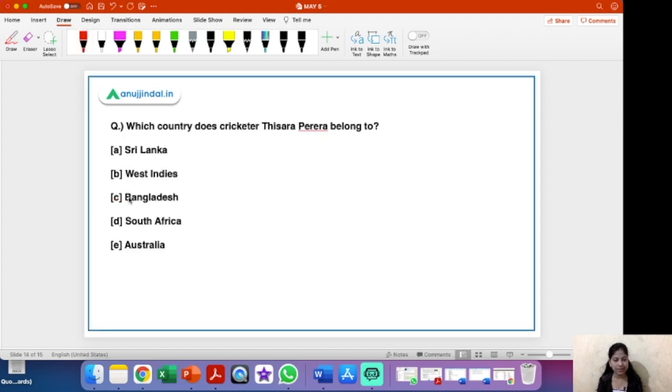Next and last question is which country does cricketer Thisara Perera belong to? So you have again the five countries right in front of you: Sri Lanka, West Indies, Bangladesh, South Africa and Australia. Out of these the right answer is Sri Lanka. So the cricket lovers would have already guessed this answer but those who don't like cricket I have already told the answer. So it is Sri Lanka and why is he in the news? Because he has announced retirement from international cricket. That's why he was making the headlines and I took up this question.